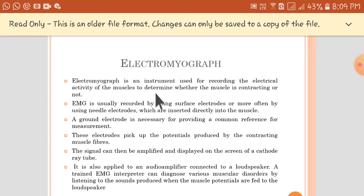The recording can be done by using surface electrodes or needle electrodes which can be inserted directly into the muscles. These electrodes pick up the potentials produced by the contracting muscle fibers.